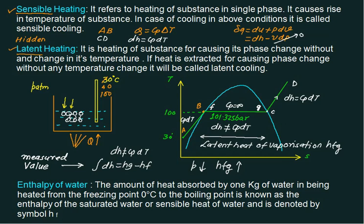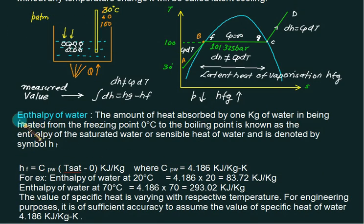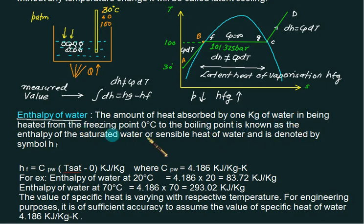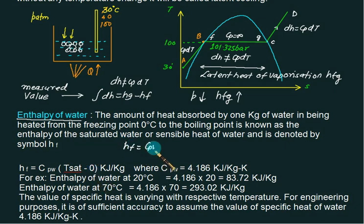This heat is called latent heat. The next term is enthalpy of water. When we have water at point B (saturated water), enthalpy is defined as the amount of heat absorbed by 1 kg of water in being heated from the freezing point (0°C) to the boiling point. It is given as hf = cpw × (T_sat − 0), where the reference is 0°C.